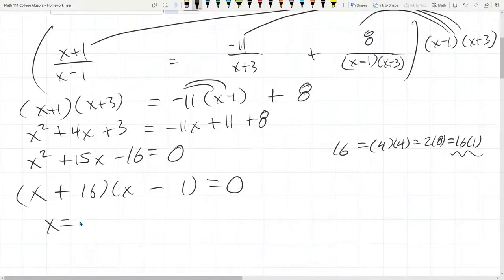So we have two solutions. The first one, x equals negative 16 zeroes out the first factor. The second factor, x equals 1. So it looks like we have two solutions.